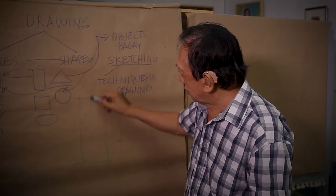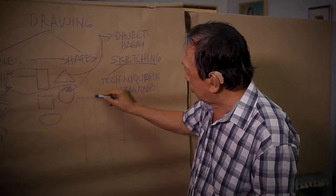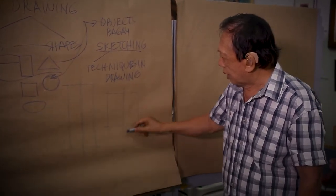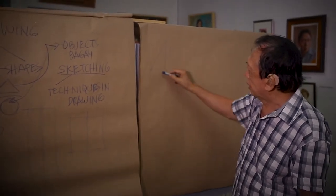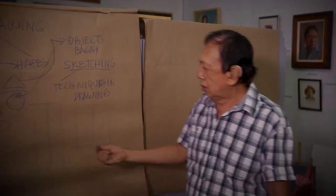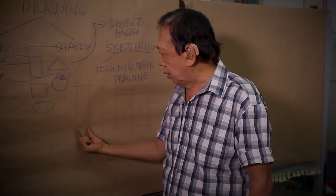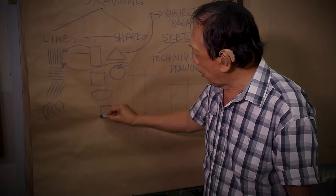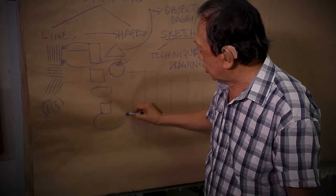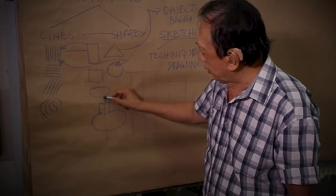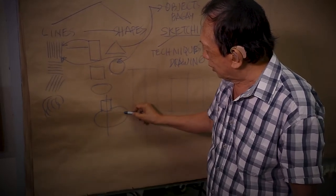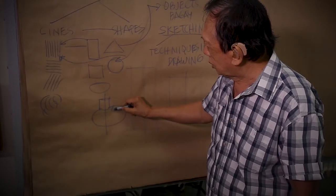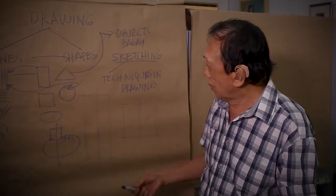Yung pangalawang step: magdodrawing ka ng isang vertical line sa gitna. Bakit merong vertical line sa gitna? To measure if the right side is equal to the left side - para tingnan kung equal sila. Kasi meron nagdodrawing na walang technique, diretsyo lang. Kaya pag dilagyan mo ng vertical line sa gitna, mas malapat ito - mas makikita. Saka hindi lang yan, baka yung base mo magmumukhang hindi pantay.